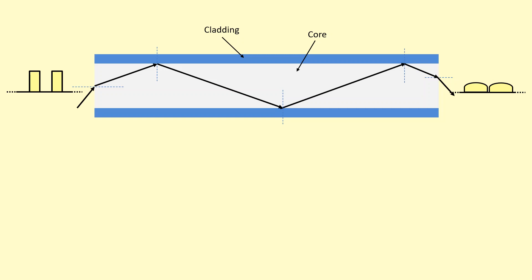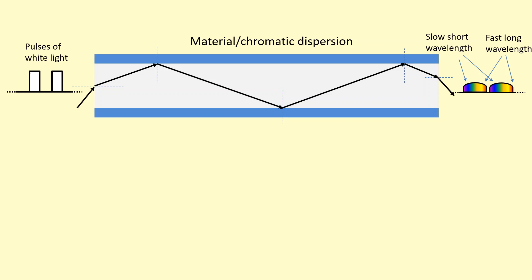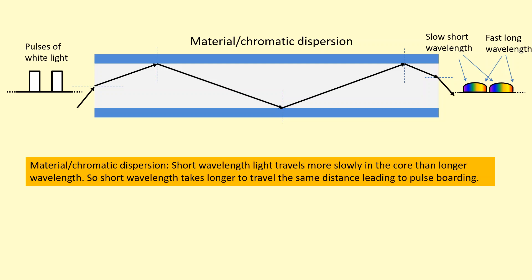One of the causes of pulse broadening is called material or chromatic dispersion. This occurs when you use white light as your pulses. When they get sent down through the optical fiber, it appears at the other end like this. And as you can see, this is because the red on the right hand side there is the faster wavelength. The longer wavelengths are faster and the shorter wavelengths are slower. So this causes the pulse to be broadened. So this is called material chromatic dispersion because the shorter wavelength is traveling more slowly, so it takes longer to arrive, to travel the same distance.